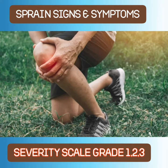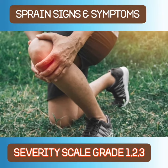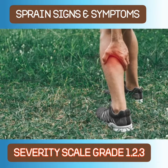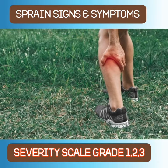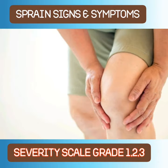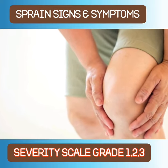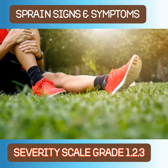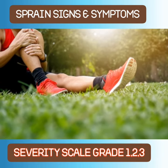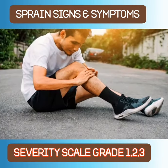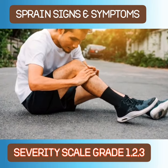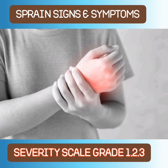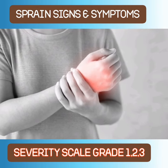Grade 3: A grade 3 severe sprain results in a complete tear or rupture of the ligament. Pain, swelling, and bruising are usually severe and the patient is unable to put weight on the joint. An x-ray is usually taken to rule out a broken bone. This type of ligament sprain often requires immobilization and possibly surgery, and it can also increase the risk of an athlete having future injuries in that area.